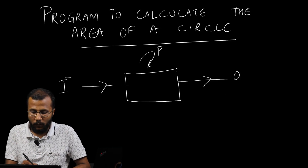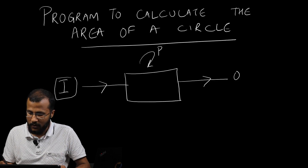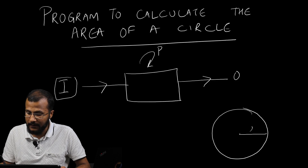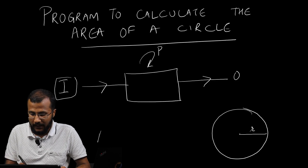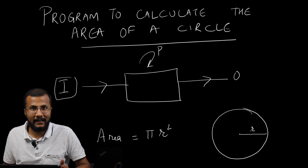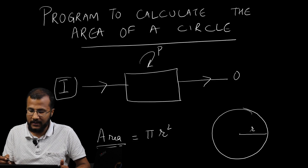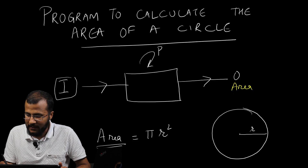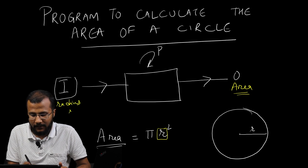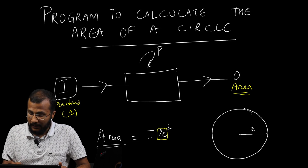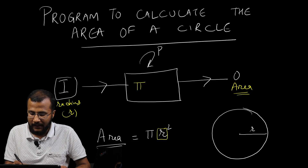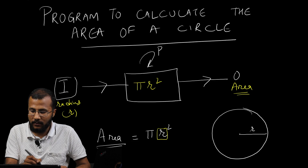Now, what would be the input? What do you need in order to calculate the area of a circle? Let's draw this circle. You should be aware that to calculate the area of a circle, you will be needing a radius. Let's say this radius is R. If given a radius, we know the formula for the area is pi R squared. Pi R squared would give us the area. So the output should be the area. The input should be the radius R. If radius R is given, the output should be area. In the processing phase, I will be applying the formula pi R squared to actually get the area of a circle.